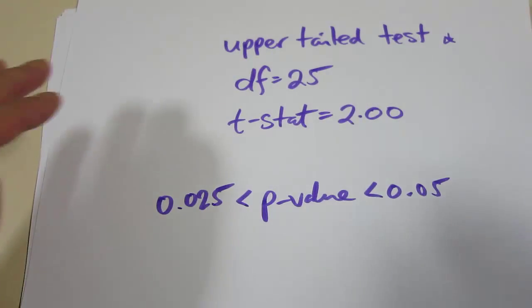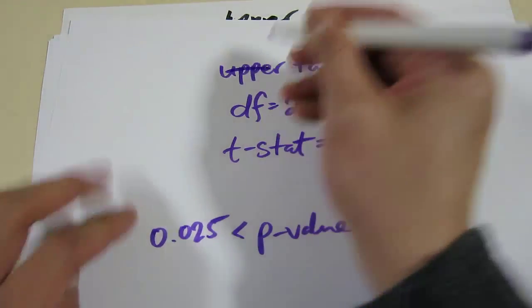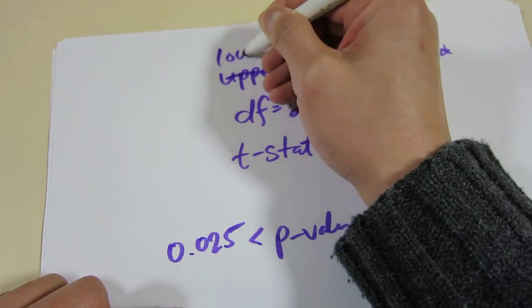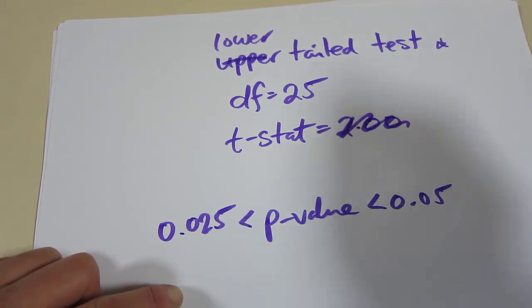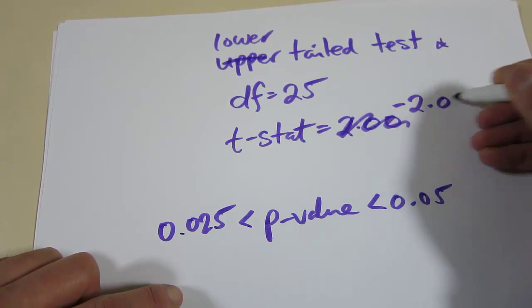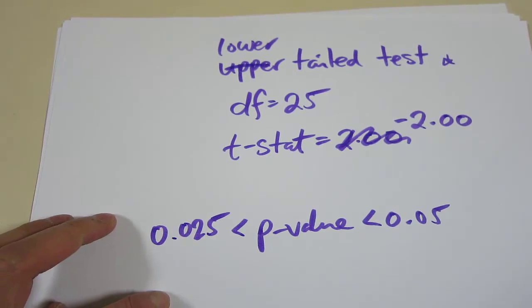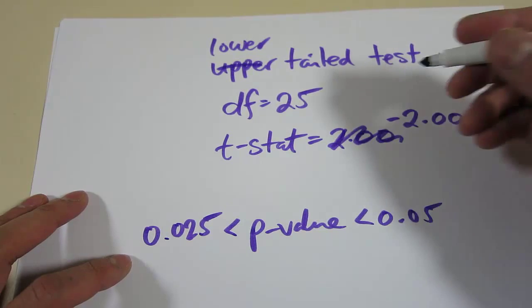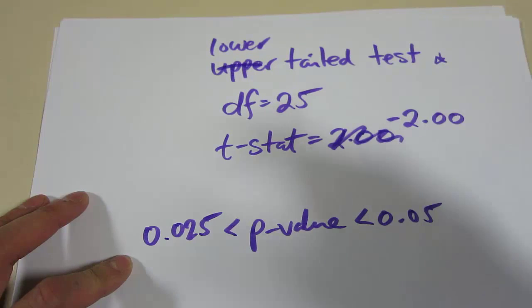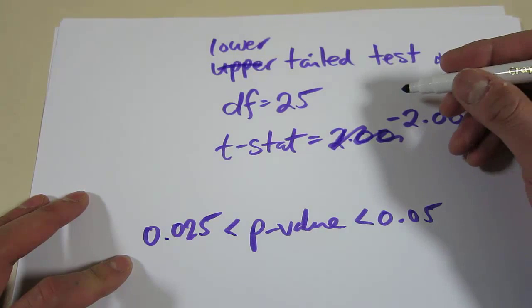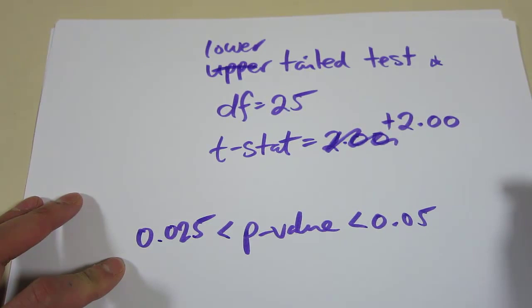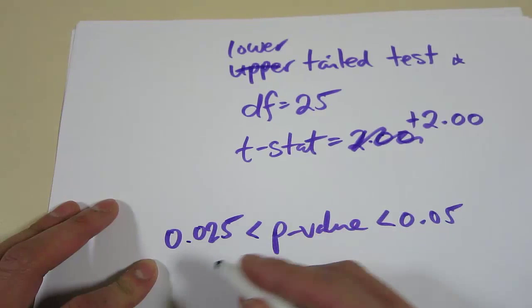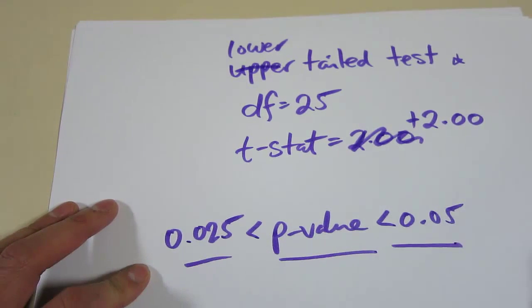Now, what happens if this was a lower-tailed test? Rather than an upper-tailed test, it was a lower-tailed test. And let's say our t-statistic was negative 2. It's quite easy. All we have to do is, because the distribution is symmetrical, we can appeal to the symmetry rule and flip it around and make it a positive 2. And we look it up and we get the same p-value as well.